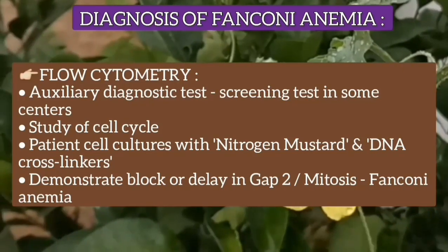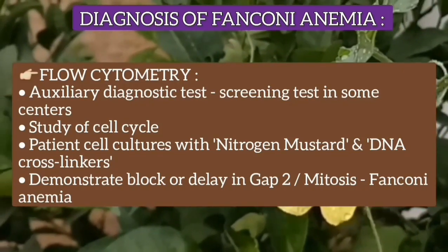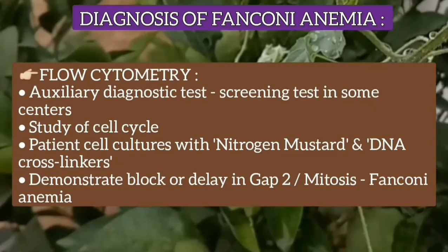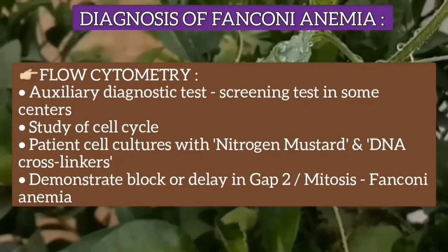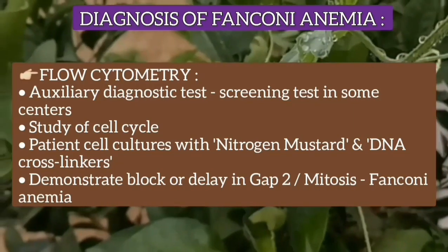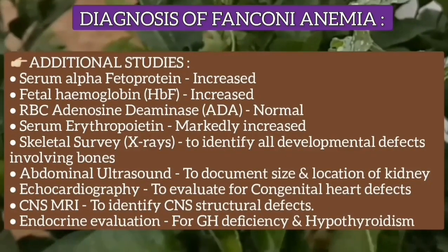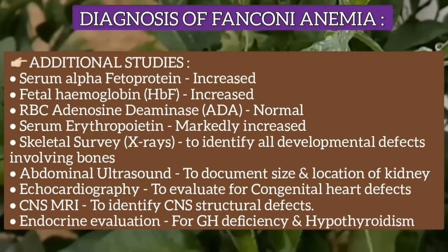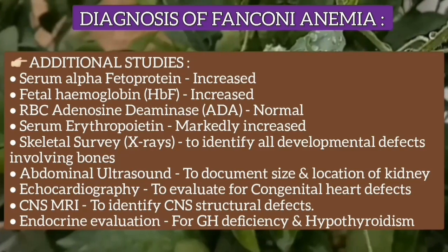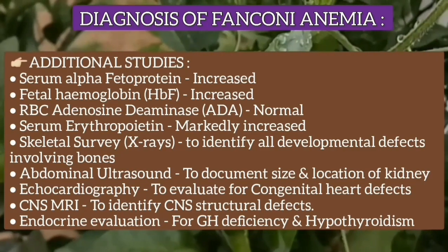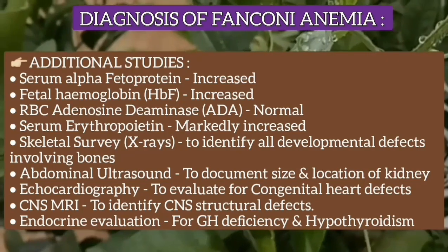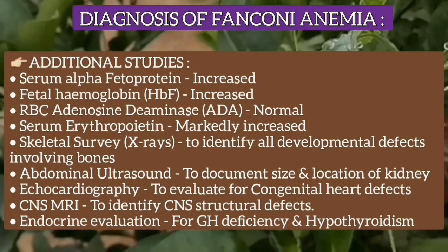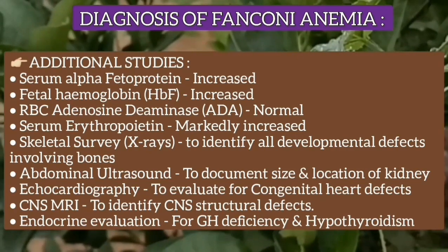Flow cytometry is a screening test used in some centers to study the cell cycle. Fanconi Anemia cell cultures with nitrogen mustard demonstrate a block or delay in G2/M. Additional studies include serum alpha-fetoprotein, which is increased, and fetal hemoglobin, which is also increased for age due to stress erythropoiesis. Red cell adenosine deaminase level is normal, while serum erythropoietin is markedly raised, though it may be low in patients with impaired renal function.